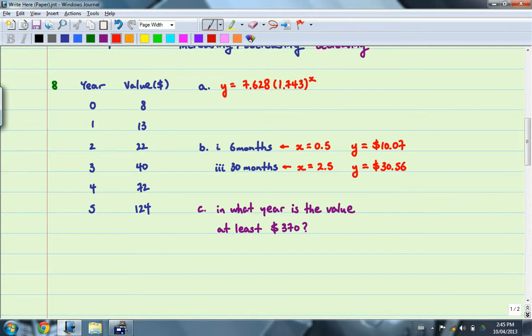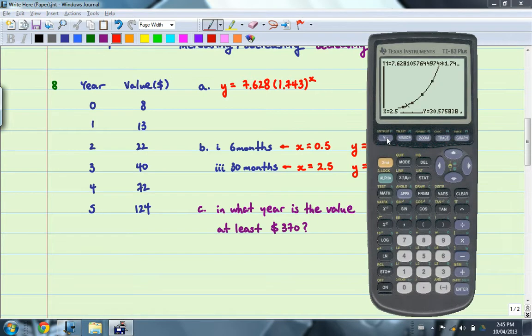Next part, we're going to find out in what year is the value at least $370. So to do that, I'm going to enter a second y equals. In this case, it's going to be $370. I'm going to change my window as well. I'm going to change it so that y max is $400. That way, I can see the horizontal line that I draw.